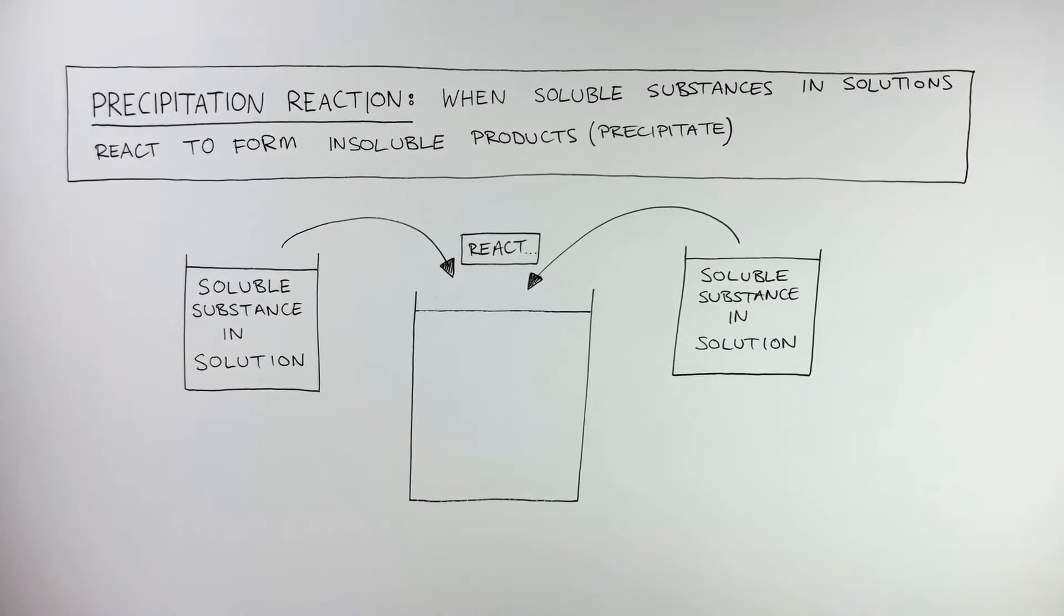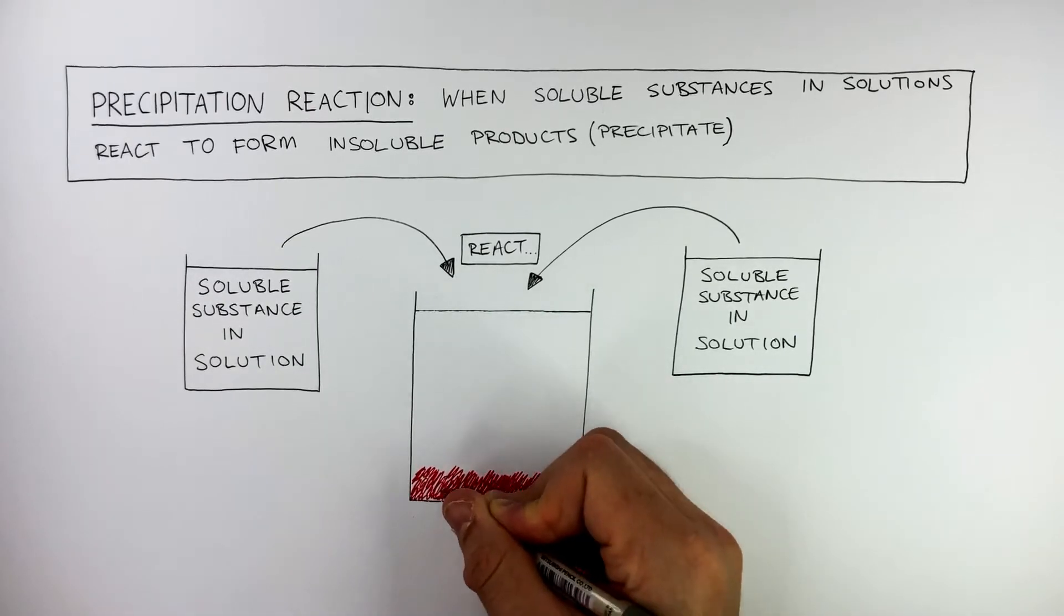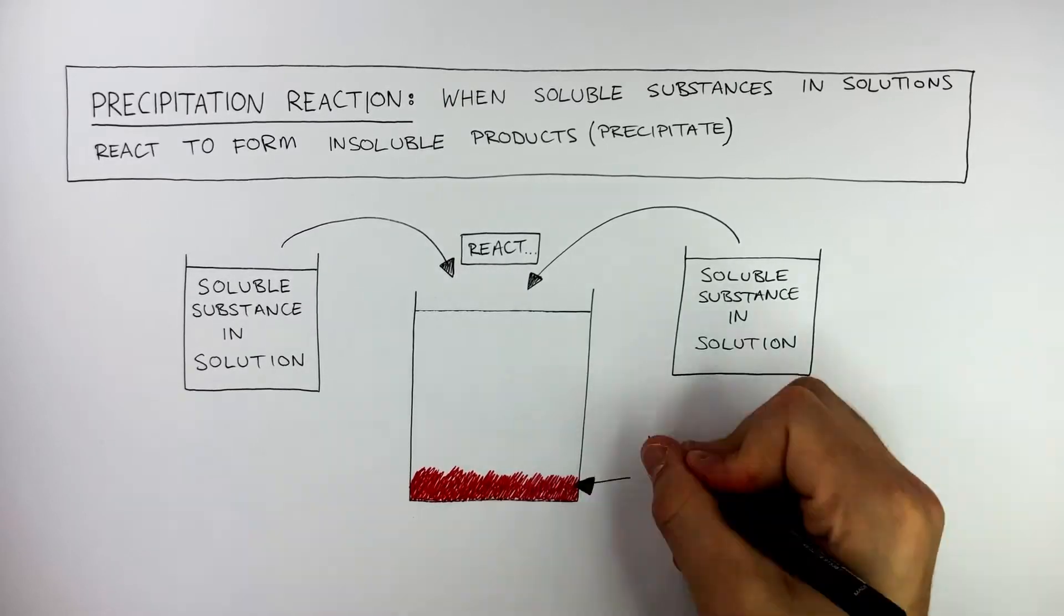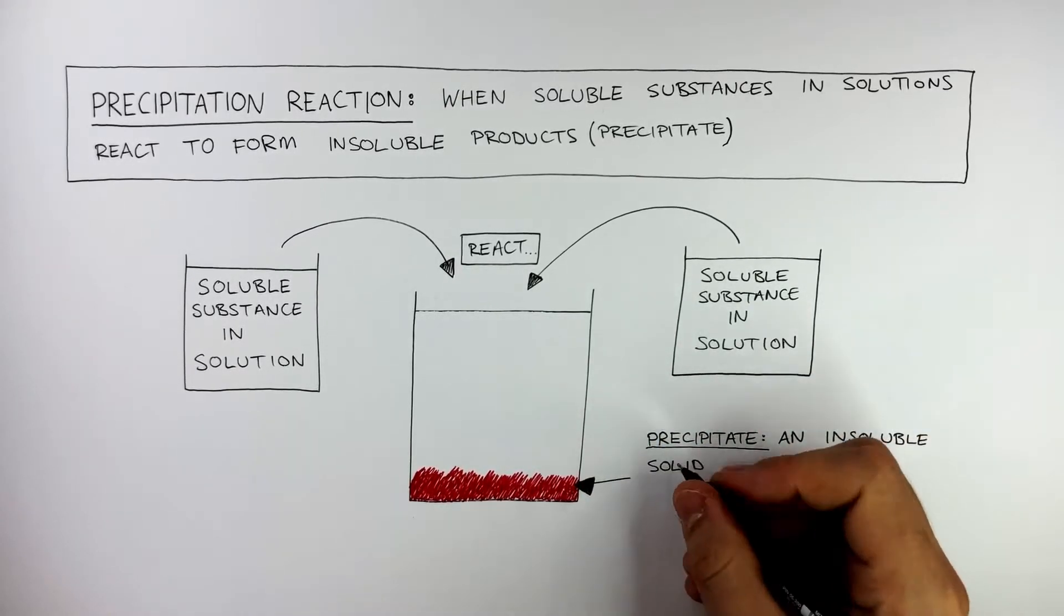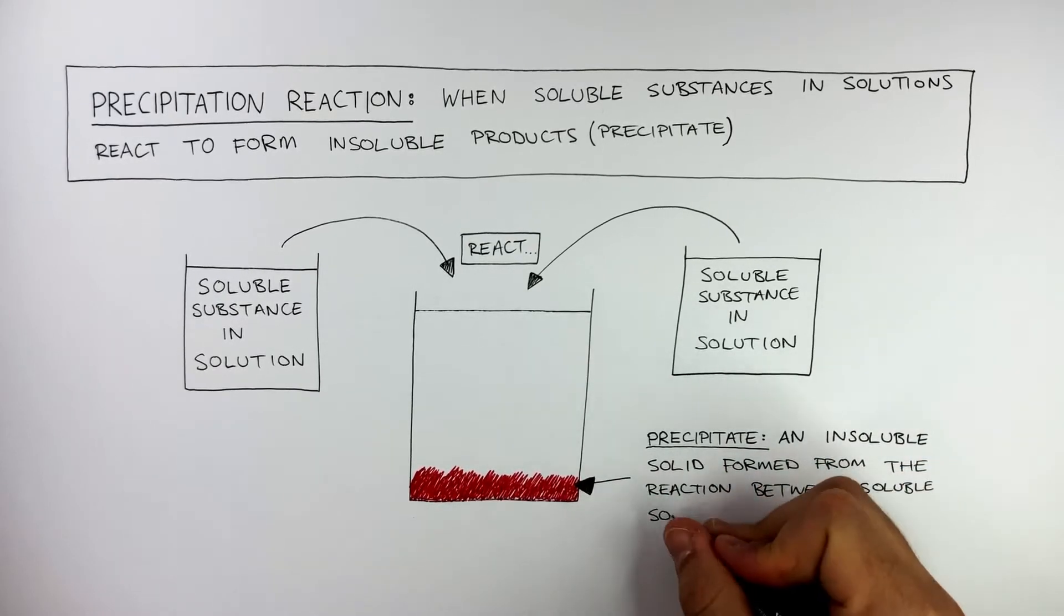So these are two soluble substances in solutions, and they react to form an insoluble product, represented by the red color at the bottom of this beaker. This is a precipitate. This is an insoluble solid formed from the reaction between soluble solutions.